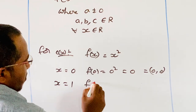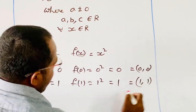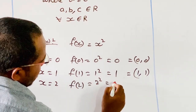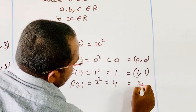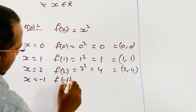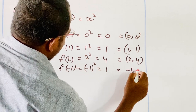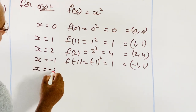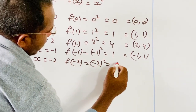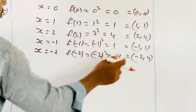When x is 1, f of 1 is equal to 1 squared, that is 1; the point is (1, 1). When x is 2, f of 2 is 2 squared, equal to 4; the point is (2, 4). When x is minus 1, f of minus 1 is equal to (−1) squared, that is 1; the point is (−1, 1). When x is minus 2, f of minus 2 is (−2) squared, equal to 4; the point is (−2, 4). Now we will represent these points on the graph.